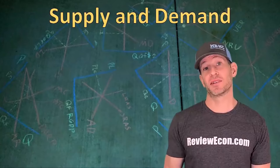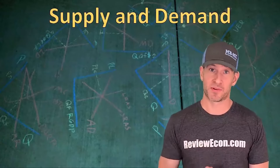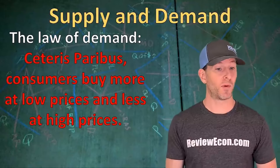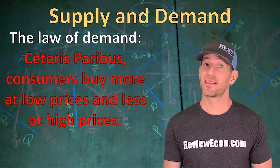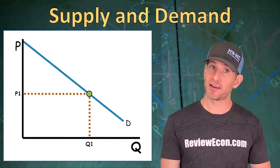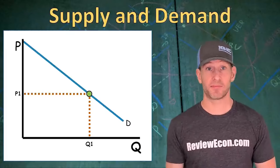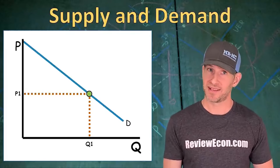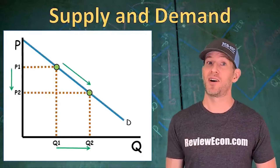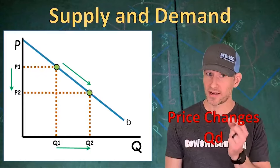The next graph we're going to look at is supply and demand. The law of demand tells us that consumers will buy more at low prices and less at higher prices — that's ceteris paribus. When we put that on the graph, we see a downward sloping demand curve showing the inverse relationship between price and quantity. Price changes quantity demanded; it does not change demand.